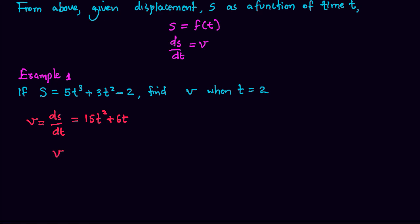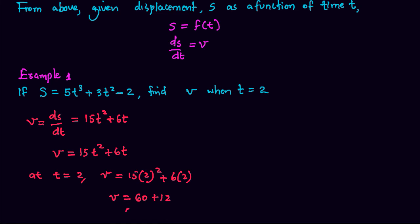So the expression for velocity is equal to 15t squared plus 6t. At t equals 2, we substitute this value into the velocity equation. V will be equal to 15 times 4 plus 6 times 2, which gives us 60 plus 12, and that is 72. Assuming distance is in meters and time in seconds, the velocity will be 72 meters per second.